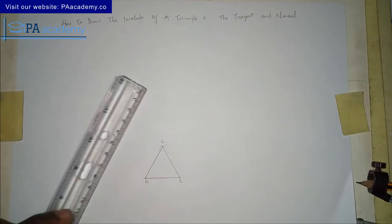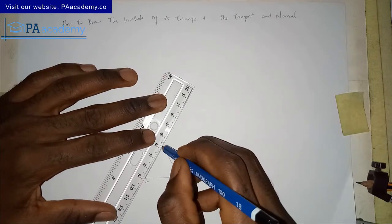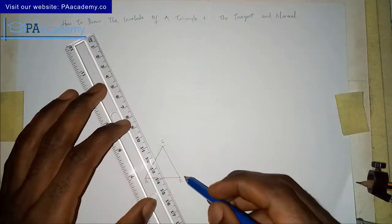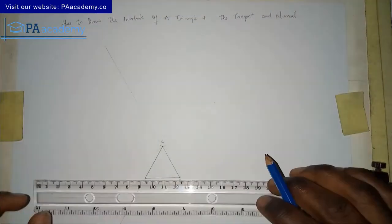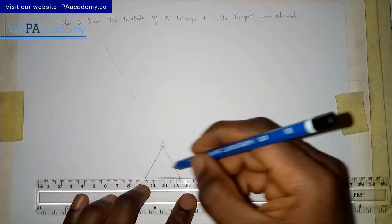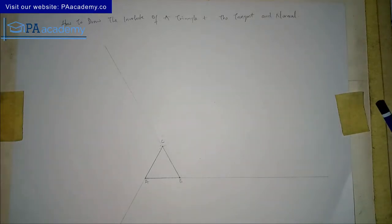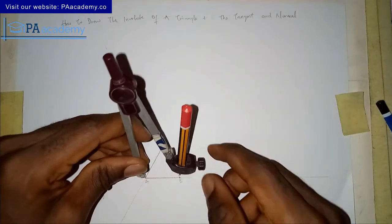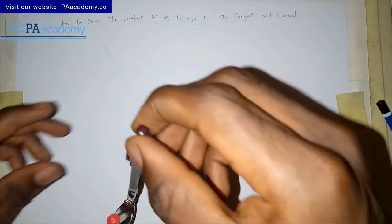Now that we already have our equilateral triangle, the next thing is to extend line AC like this, extend line BC like this, and then extend line AB the same way. We bring in our compass again with the length of AB, which is the side of the equilateral triangle — three centimeters.